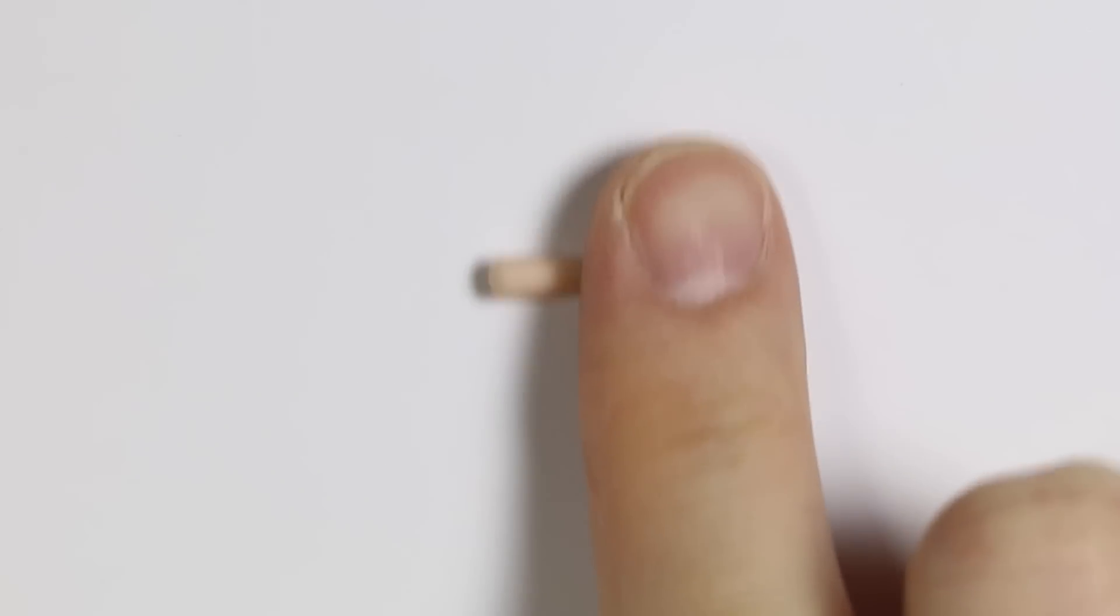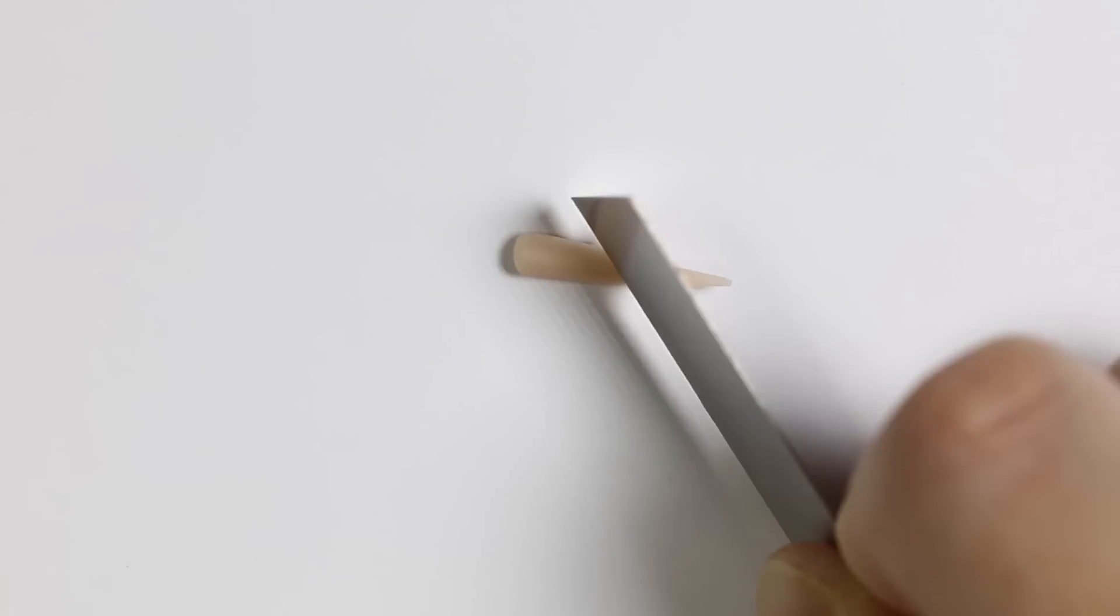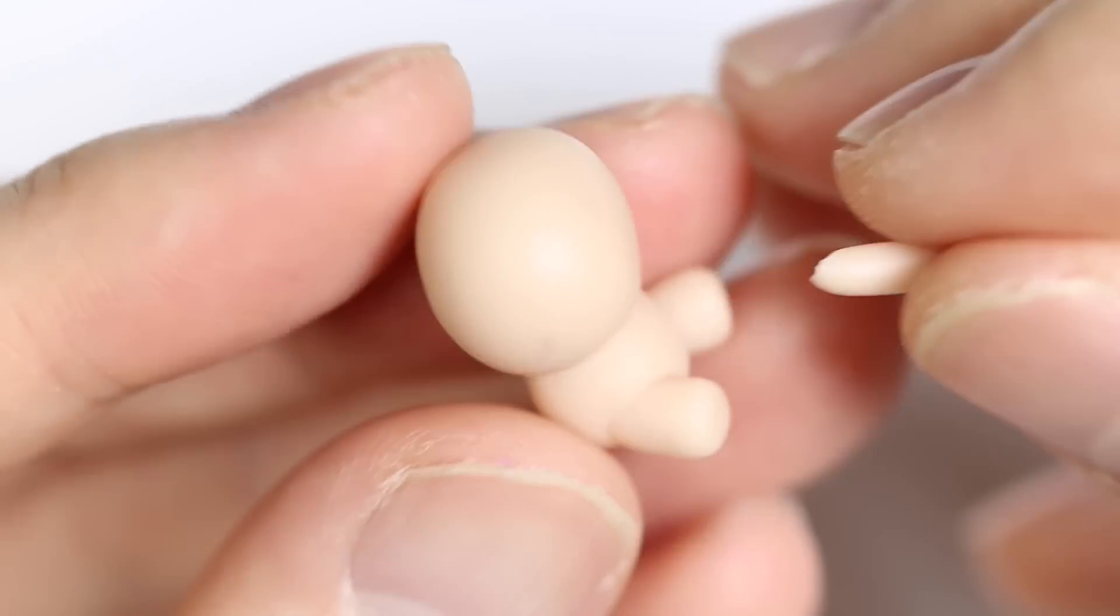For the arms, I'm going to roll into thinner teardrops and cut it at a slant again. And I'm going to blend that onto my body, making it hug itself.